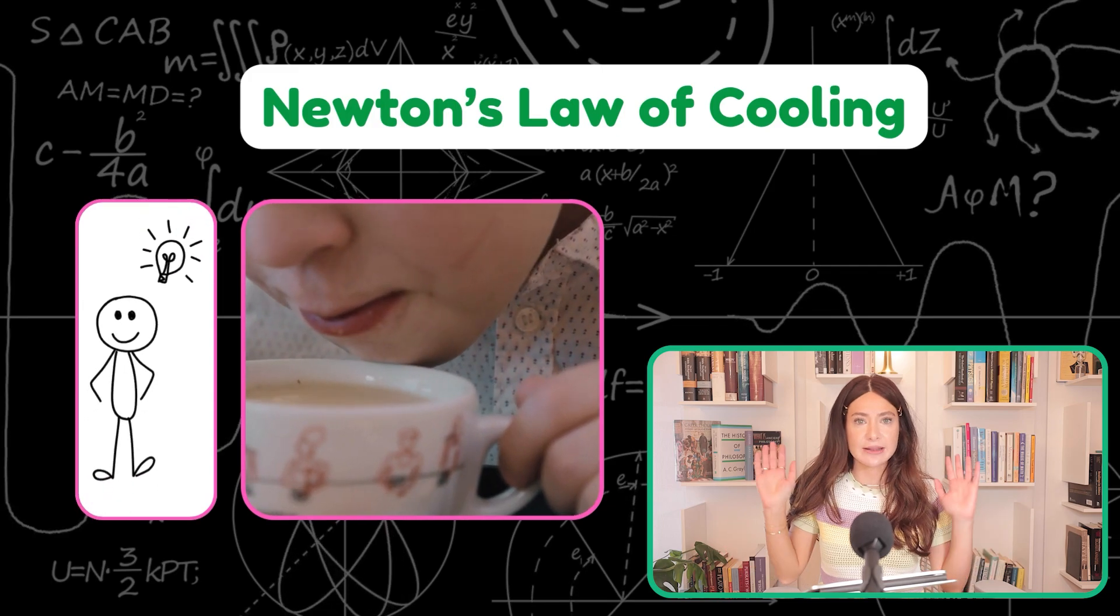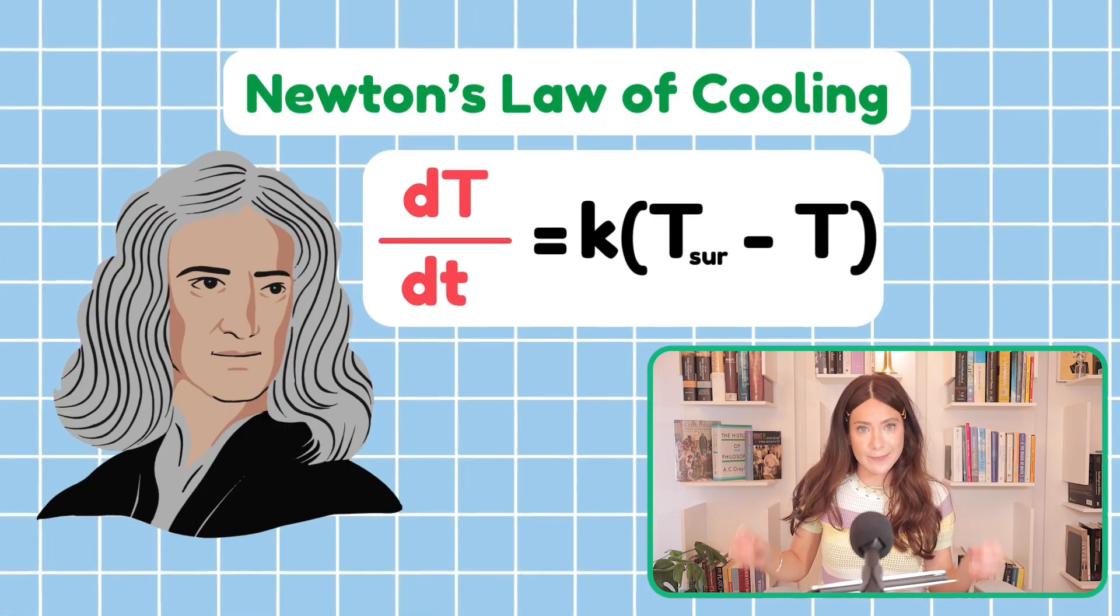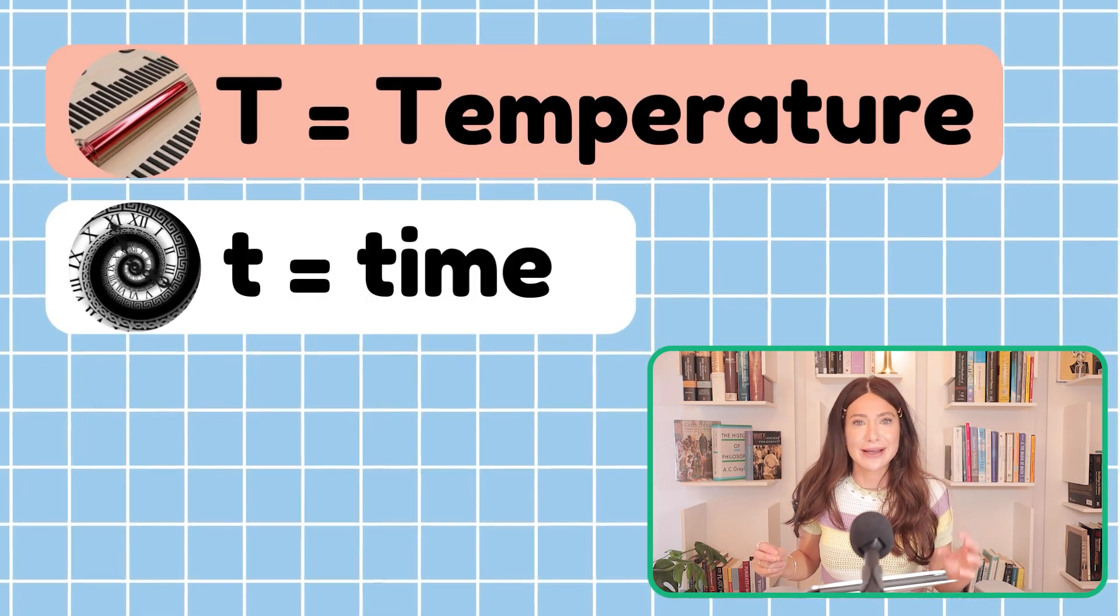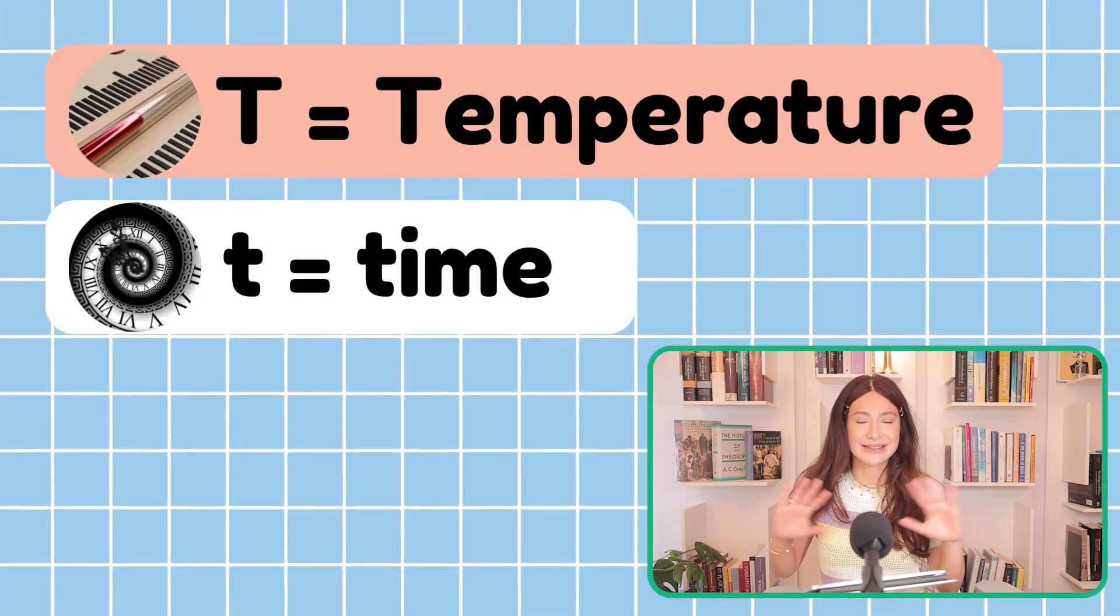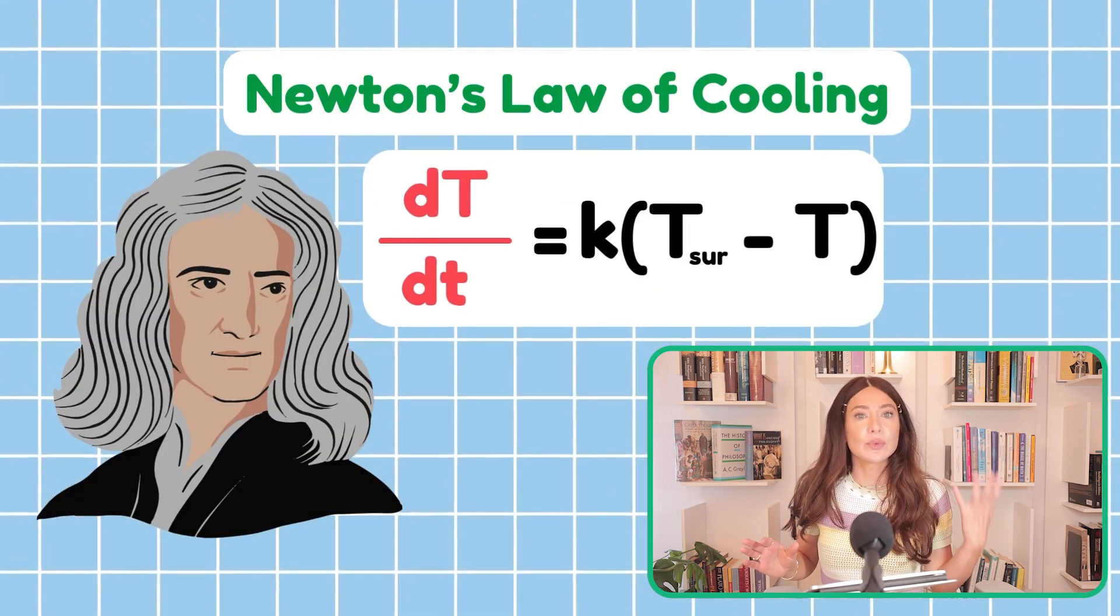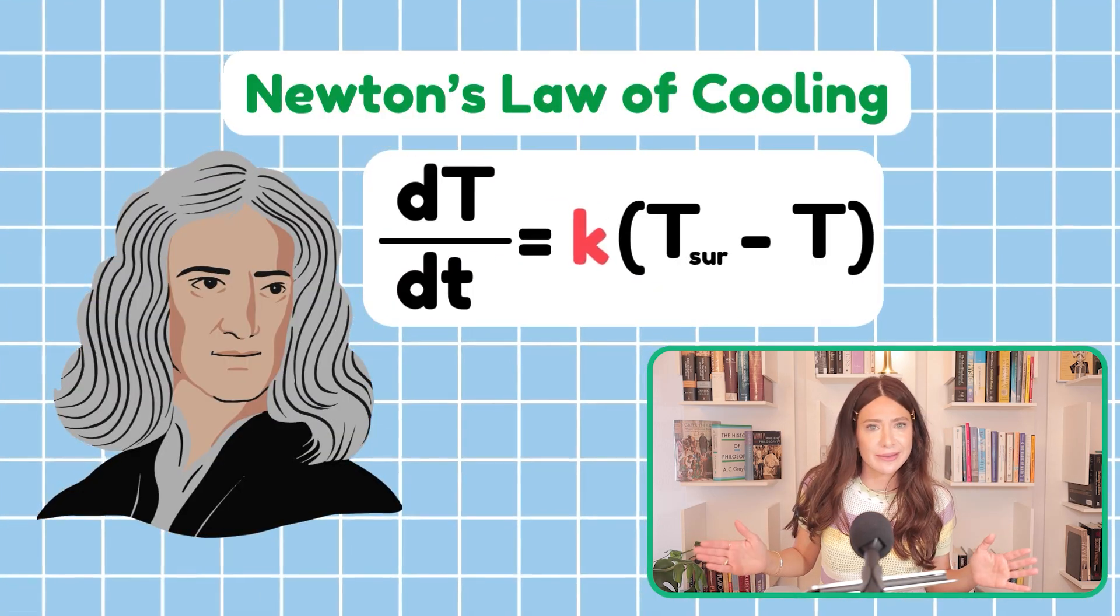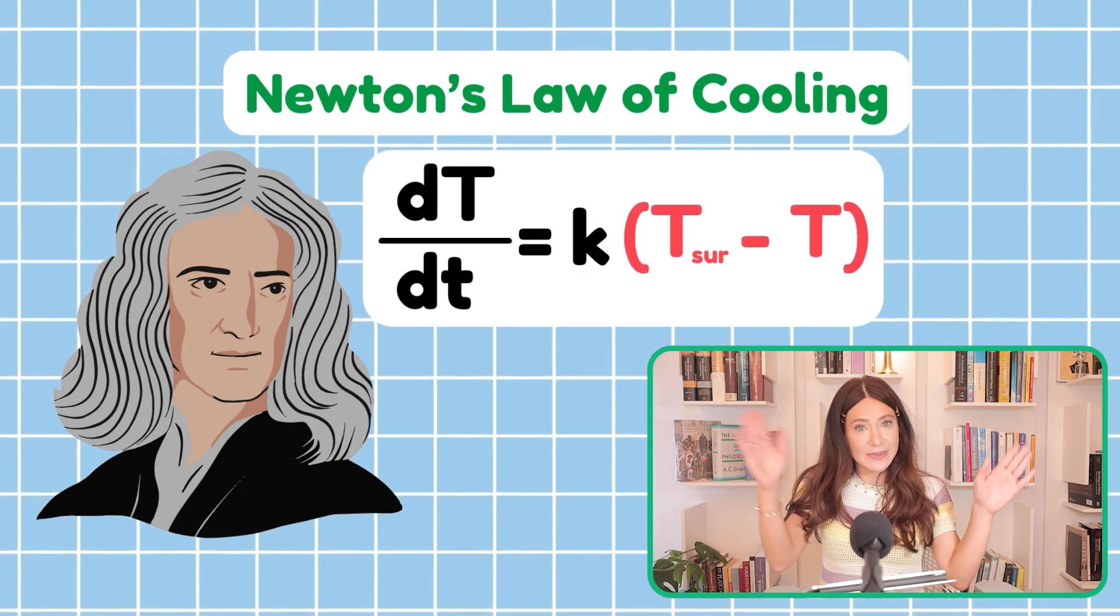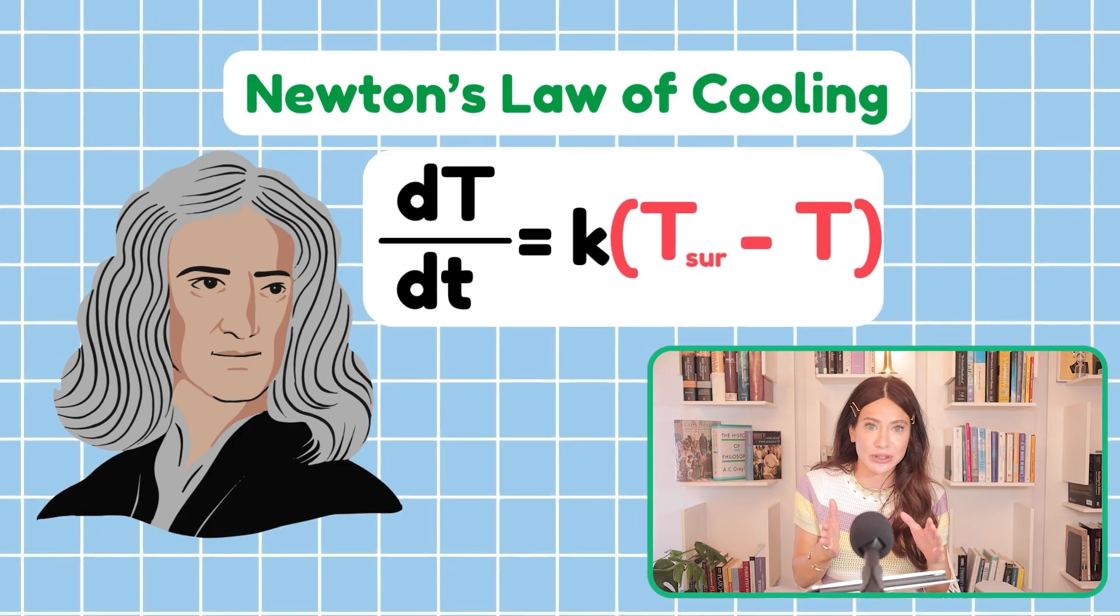Newton's law of cooling. Let me show you the formula. The left-hand side says that change in temperature in time, and capital T is temperature and small t is time. I know it's inconvenient that they share the first initial, but just keep that in mind. So the rate of change of temperature with respect to time equals some proportionality constant K times the difference between ambient or surrounding temperature and the object's temperature.